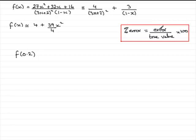So we need to calculate the error that is caused in using f of 0.2 by the estimate compared to the true value.